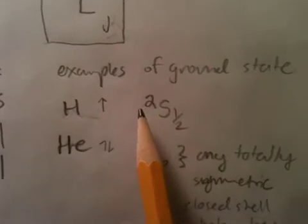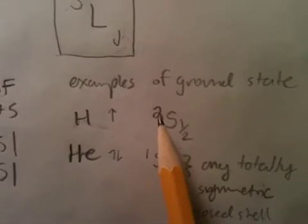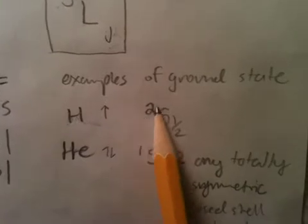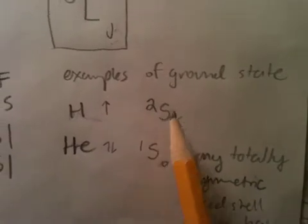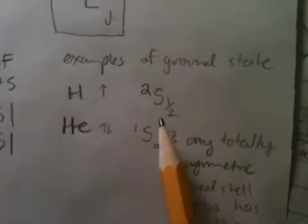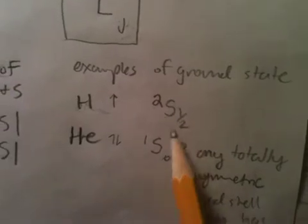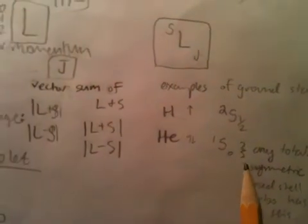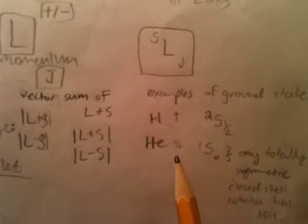So, that means we have 2 times 1 half plus 1 for your multiplicity, giving you 2. Your angular momentum is 1 because you have 1 electron with 1 angular momentum, and then your J is 1 half.